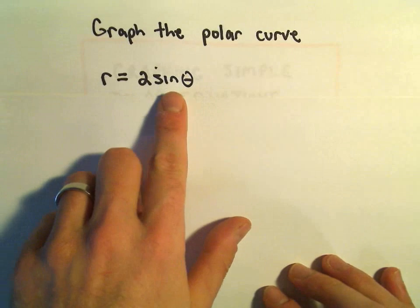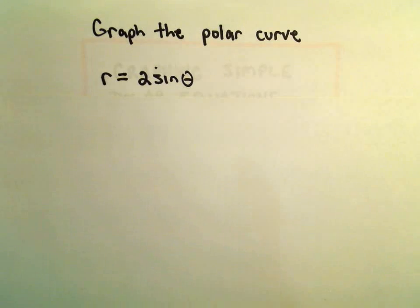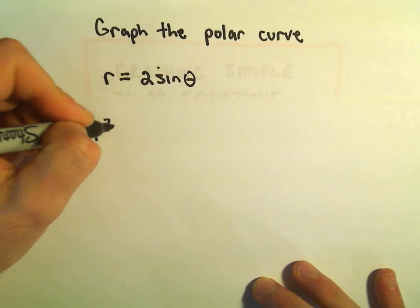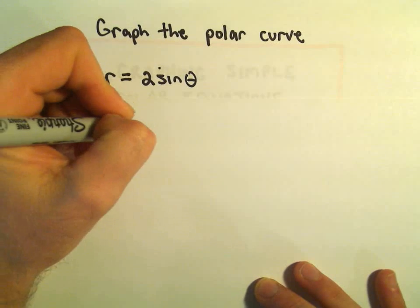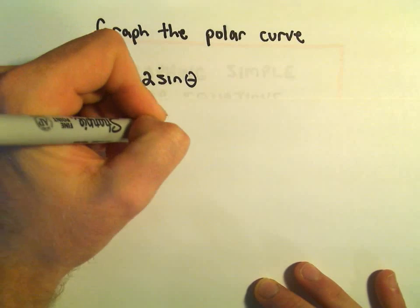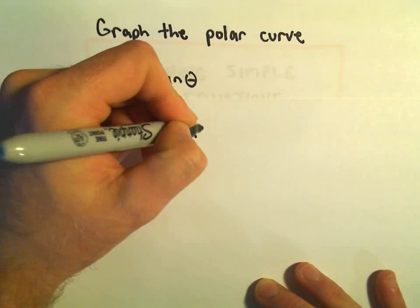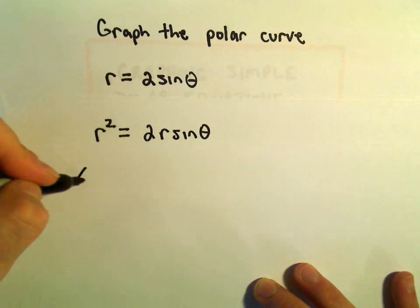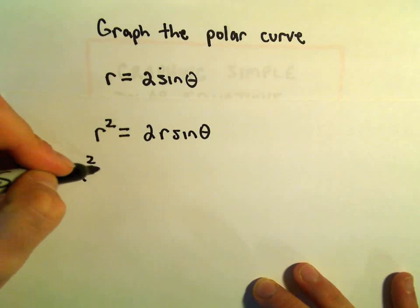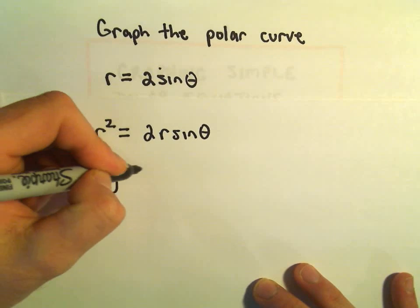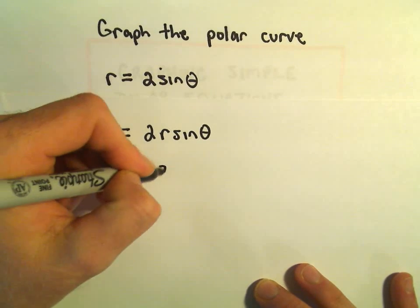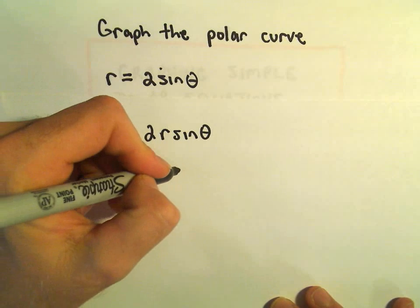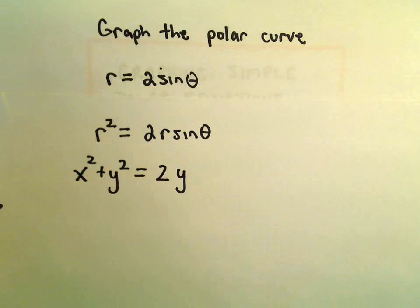I would like to have an r with my sine theta, so I'm going to multiply both sides by r. I'll get r squared on the left, and 2r sine theta on the right. Well, r squared is just x squared plus y squared, and r sine theta is the same thing as y.